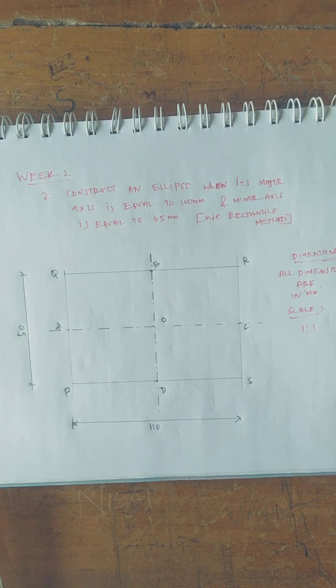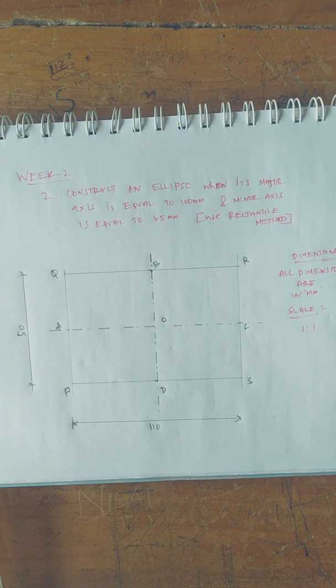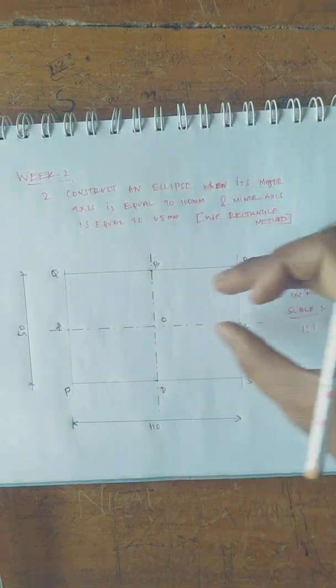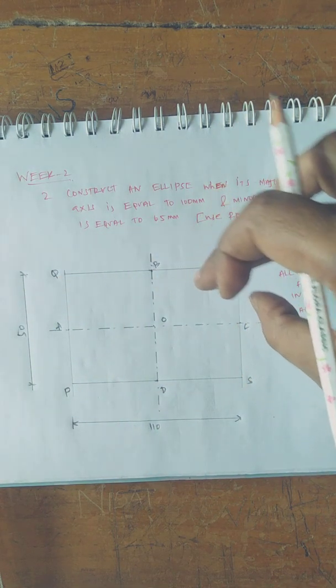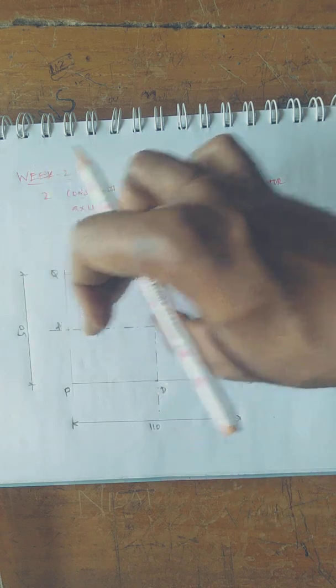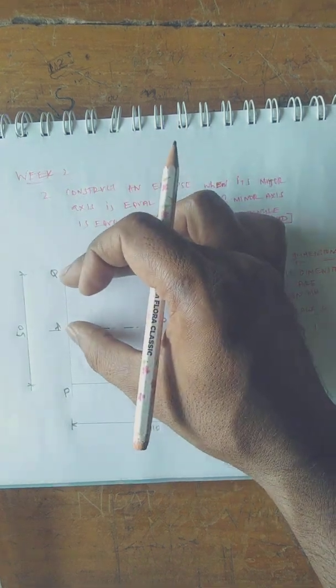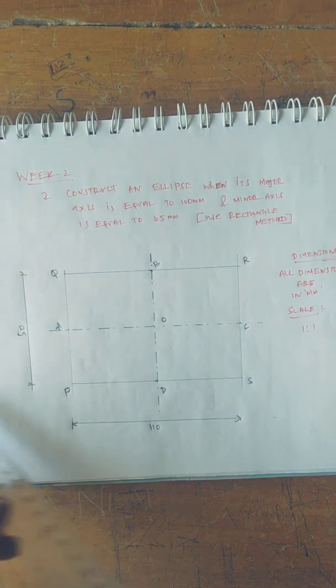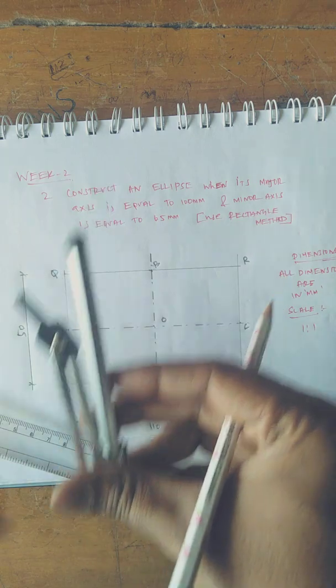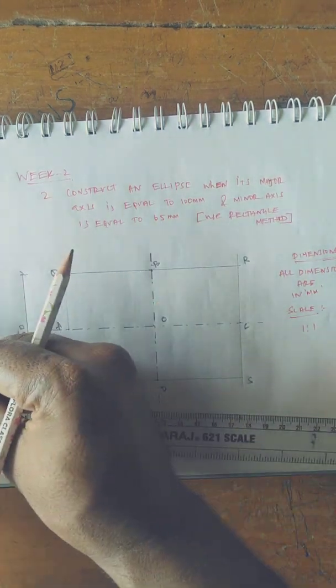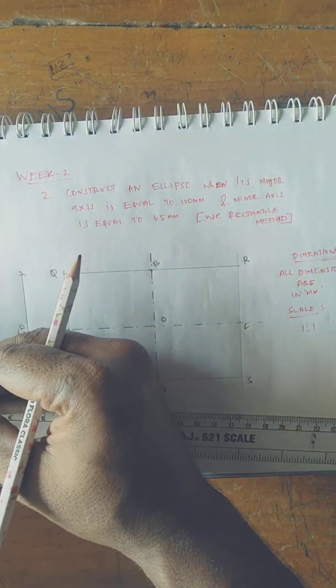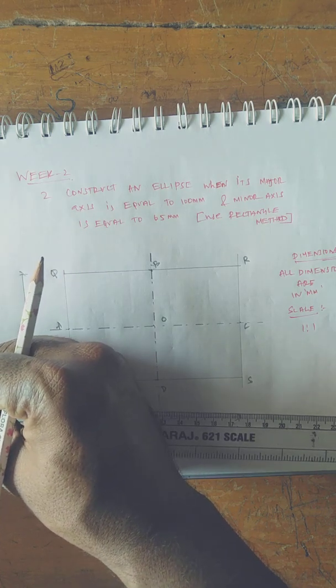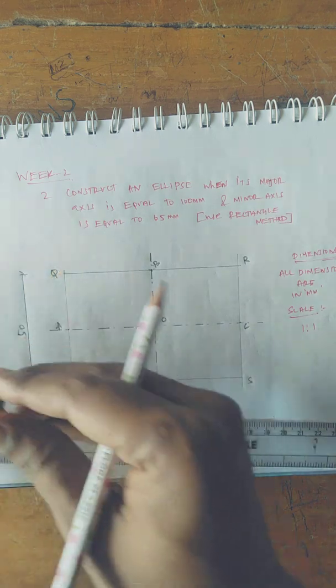Now we have to divide in equal parts these segments. For example, this is 25 mm. I could divide in four equal parts. 25 divided by 4 is 6.25 mm, very minimal.